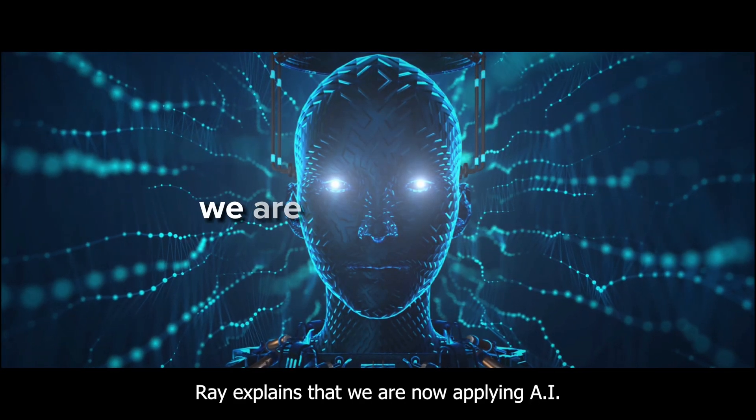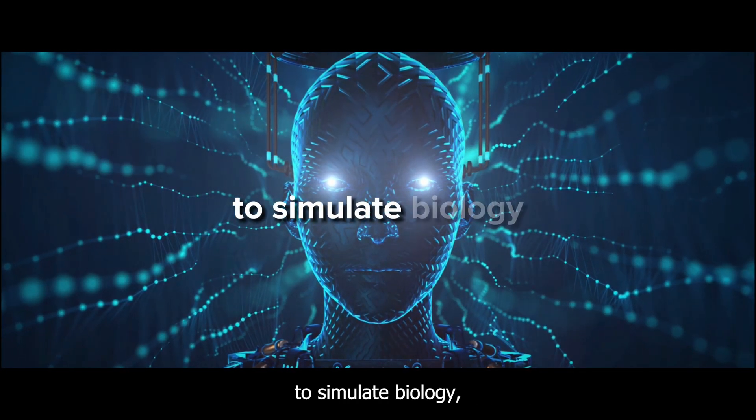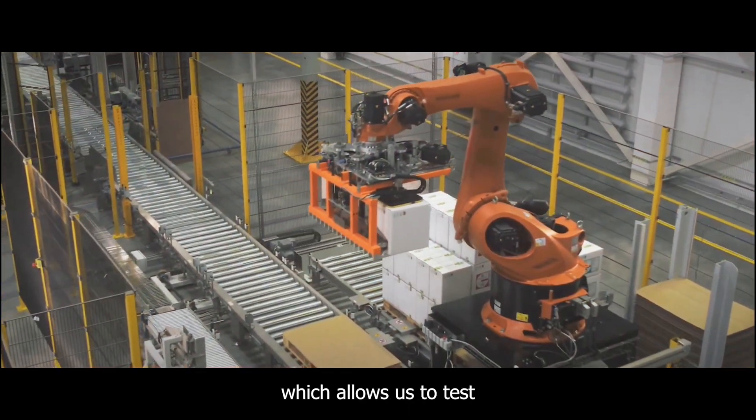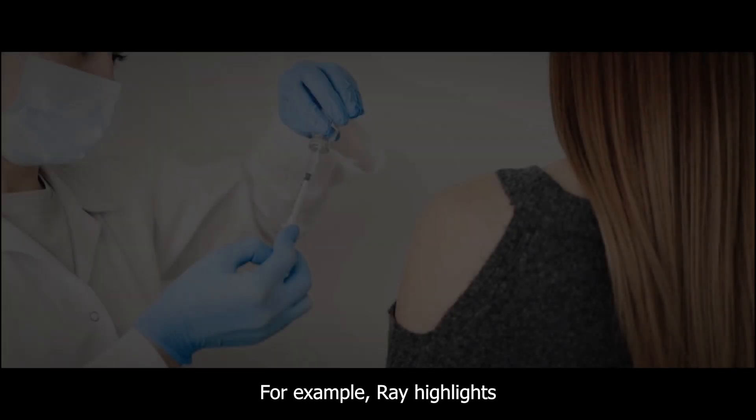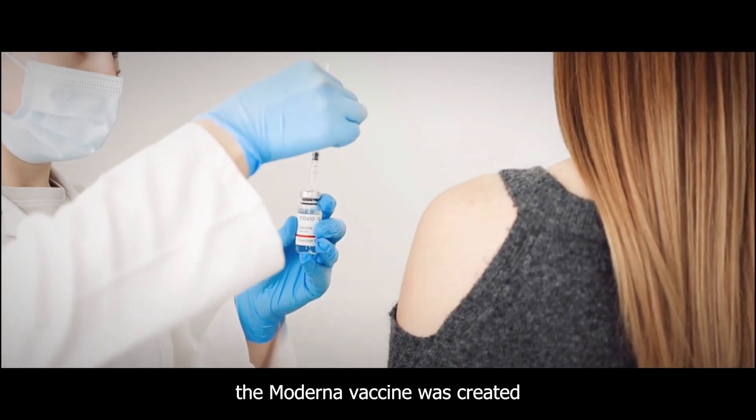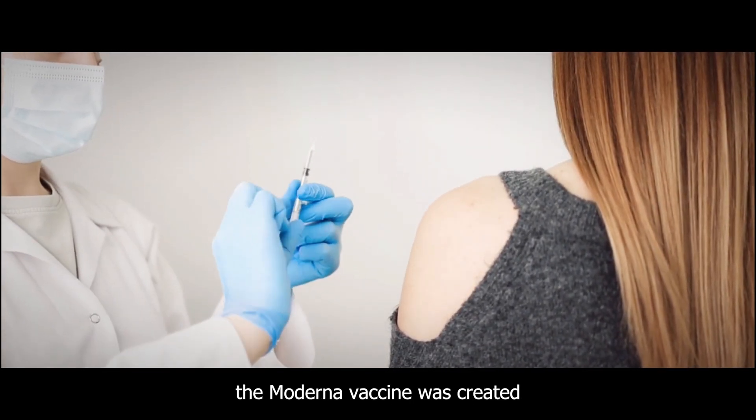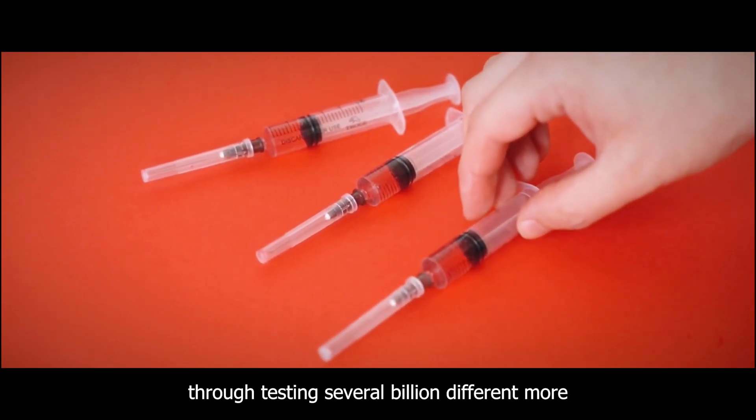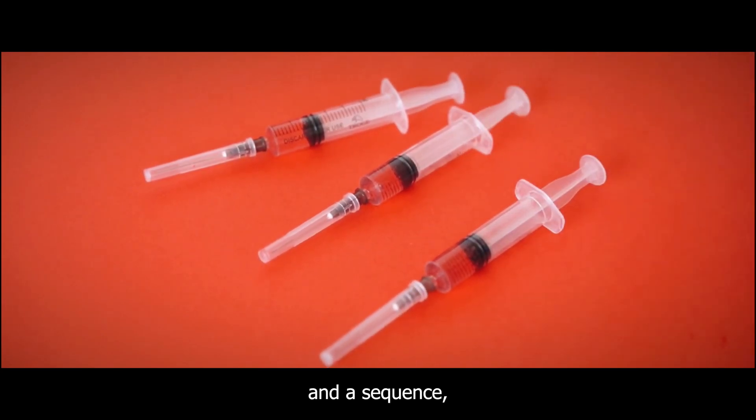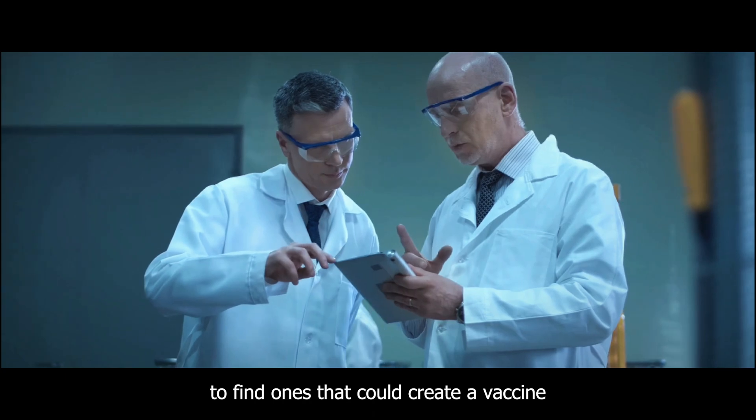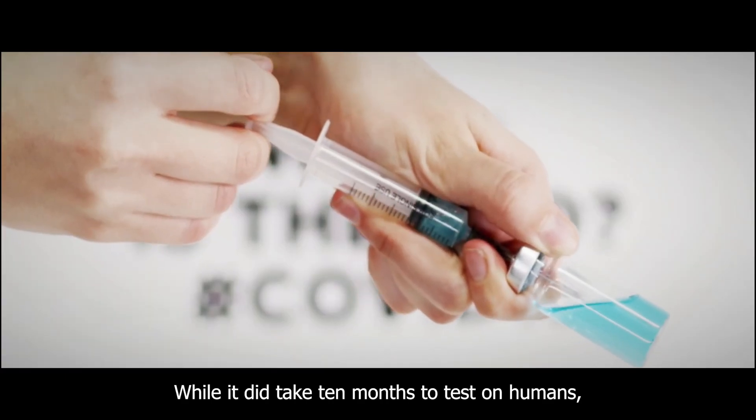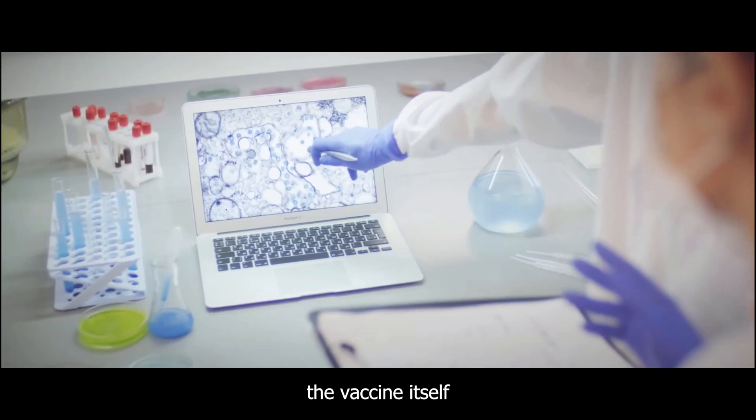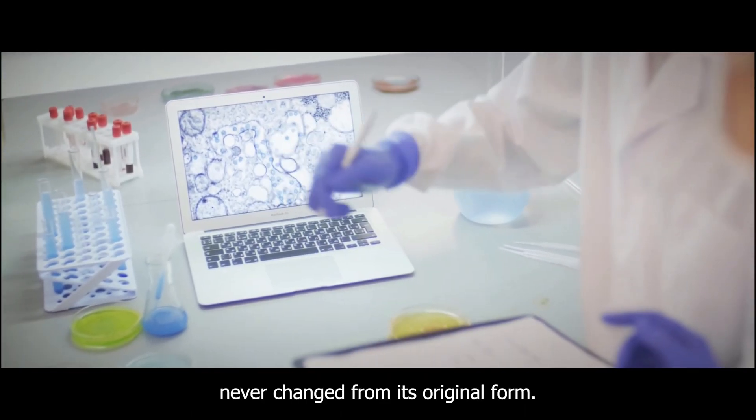Ray explains that we are now applying AI to simulate biology, which allows us to test and find solutions much more quickly. For example, Ray highlights the incredible speed at which the Moderna vaccine was created. Through testing several billion different mRNA sequences, researchers were able to find ones that could create a vaccine in just three days. While it did take 10 months to test on humans, the vaccine itself never changed from its original form.